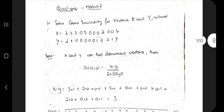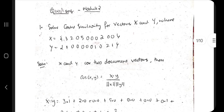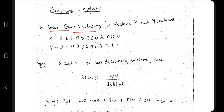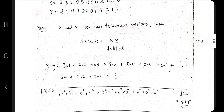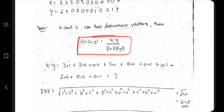Let's get started. First, let's discuss Cosine similarity. The question could be: solve cosine similarity for vectors X and Y, where X and Y are given. It's very simple. When you have been given X and Y, you have to write this formula — just remember: cos(X,Y) is equal to X dot Y divided by the magnitude of X times the magnitude of Y.